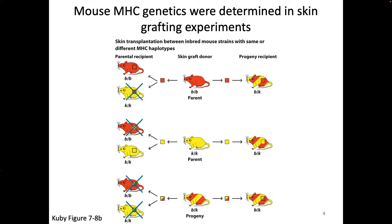Scientists did more and more complicated crosses and skin grafting experiments to find information about the genes governing transplant rejection. Sometimes students look at this and think it's the answer to all transplantation — like next time I need a kidney I just call my mom. Please note that these examples show the situation in inbred mice. The fact that humans are not inbred complicates this genetics even further, so do not imagine that all progeny can get all transplants from all their parents, because that's not the case in non-inbred species.